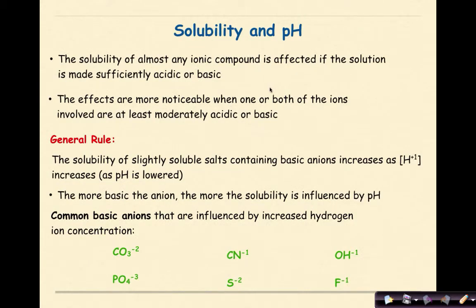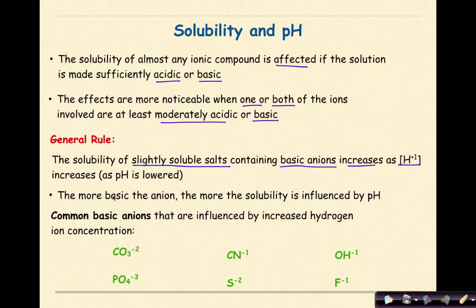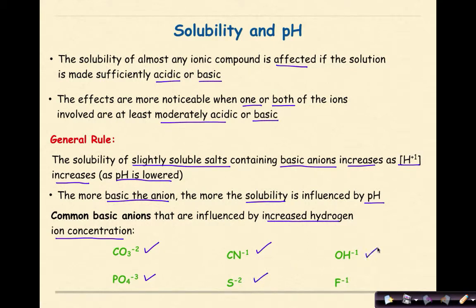Now let's talk about solubility and pH. The solubility of almost any ionic compound is affected if the solution is made sufficiently acidic or basic, most noticeably when one or both ions are moderately acidic or basic. The general rule: the solubility of slightly soluble salts containing basic ions increases as the hydrogen ion concentration increases — in other words, as pH is lowered. The more basic the ion, the more solubility is influenced by pH. Common basic ions affected include carbonate, phosphate, cyanide, sulfide, hydroxide, and fluoride — all considered weak bases.